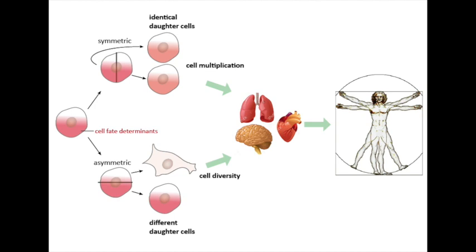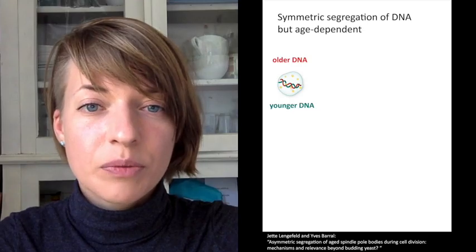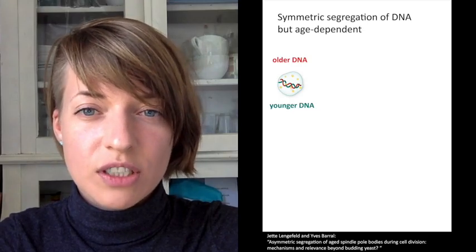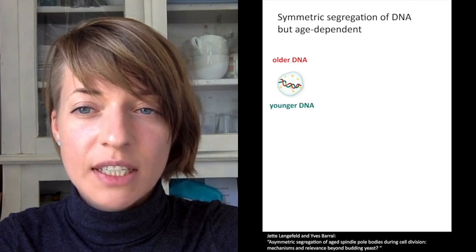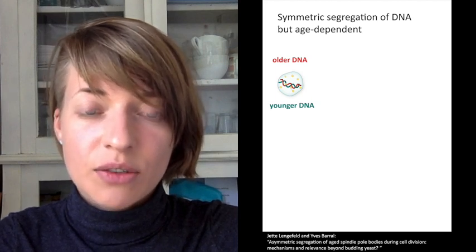That means that the two daughter cells inherit different amounts of them. This has been extensively studied and reviewed. In our review, we focus on molecules and structures that partition asymmetrically in respect to their age and not to their mass.